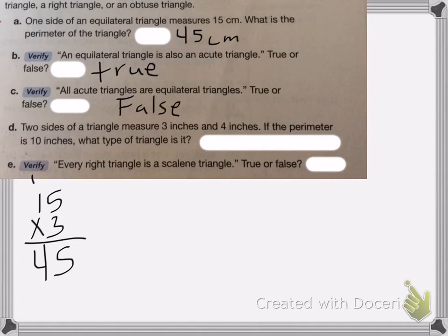All right. So two sides of a triangle measure three inches and four inches. If the perimeter is 10 inches, what type of triangle is it? Well, on this one, I know that 10 inches is my total. So I'm going to subtract three and four inches from it to figure out what the length of my last side is.